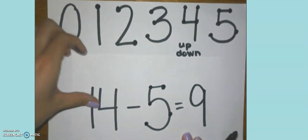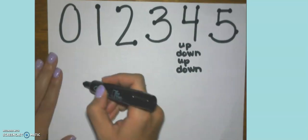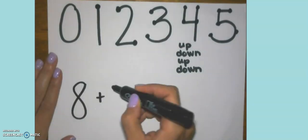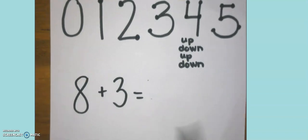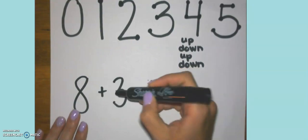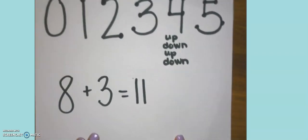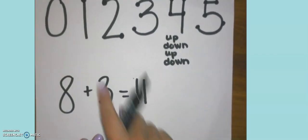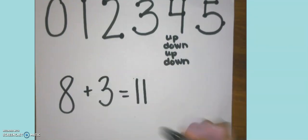Now, eventually, your child is not going to need to draw the touch points. Eventually, they're going to get to the point where they know where the touch points are, and they can simply go like this, 8, 9, 10, 11. And they just can tap it with their pencil as they go. It becomes a lot quicker. But until we get to that point, it's probably a good idea to have your child draw the touch points to help them.